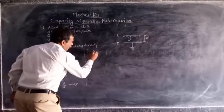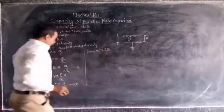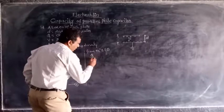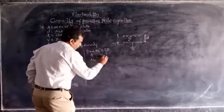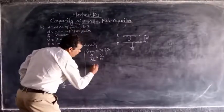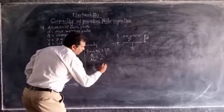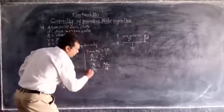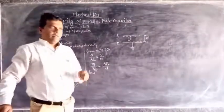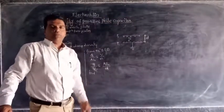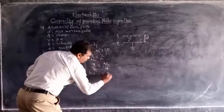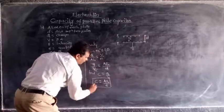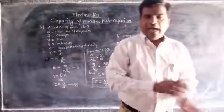Now, from equations 1 and 2, comparing: E equals Q upon A epsilon-zero and E equals V by d. Therefore, from equations 1 and 2, we can write Q upon A epsilon-zero equals V by d. Rearranging, Q by V equals A epsilon-zero upon d. Capacity is nothing but the ratio of charge to potential difference. Therefore C equals Q by V, and so C equals A epsilon-zero upon d. This is the expression for the capacity of a parallel plate capacitor with air as the dielectric.